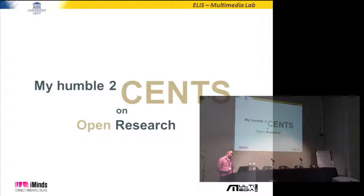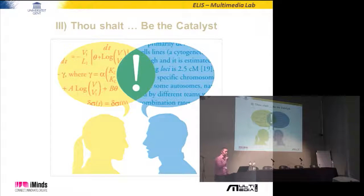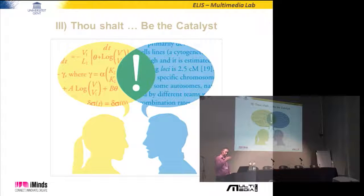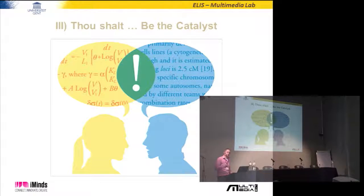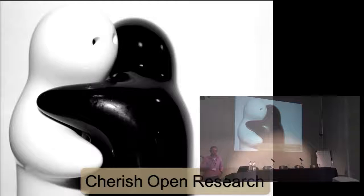My humble two cents on open research in two slides: thou shalt be the catalyst for all the different sorts of science — the alpha, beta, gamma sciences. If they publish in the right way, you librarians are the catalyst to getting all this data out there. Maybe it will be easier for scientists to get out of their comfort zone and try to work more interdisciplinary. Cherish open research.